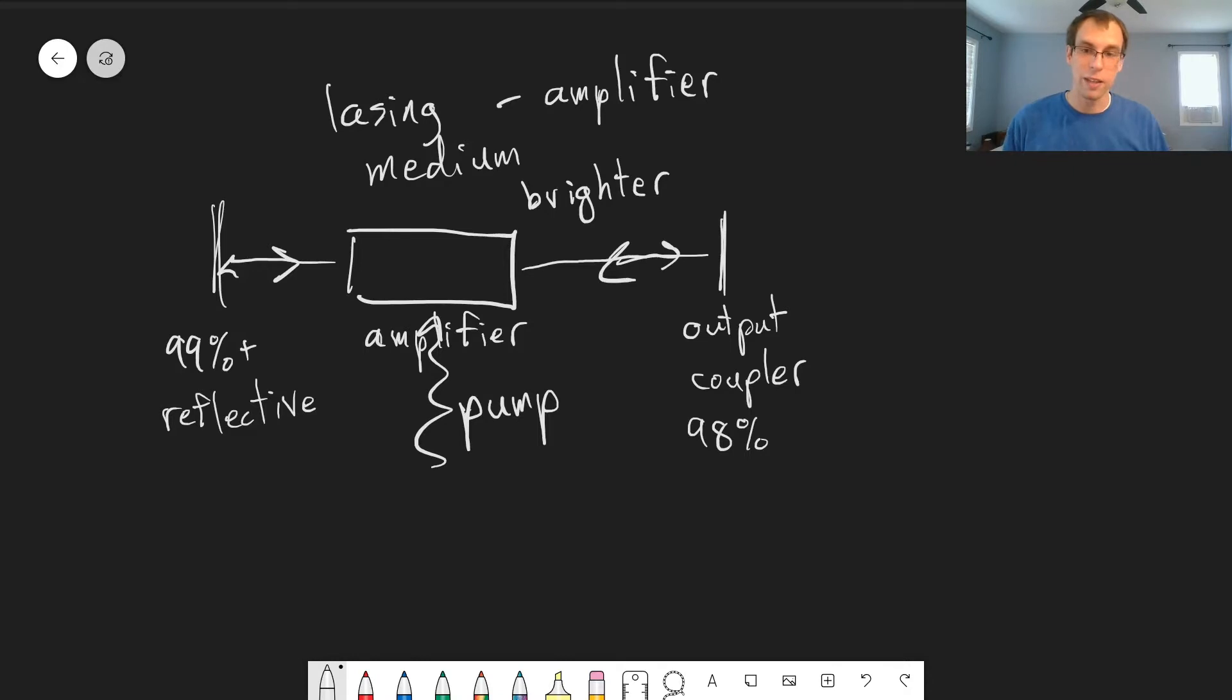But the thing that makes lasers so interesting is all this light is at a very specific frequency. It's at the specific frequency that matches the lasing transition. And so because this output coupler is a little bit less reflective, some of the light also comes out. And this is our laser beam that we actually use for whatever we're trying to do.